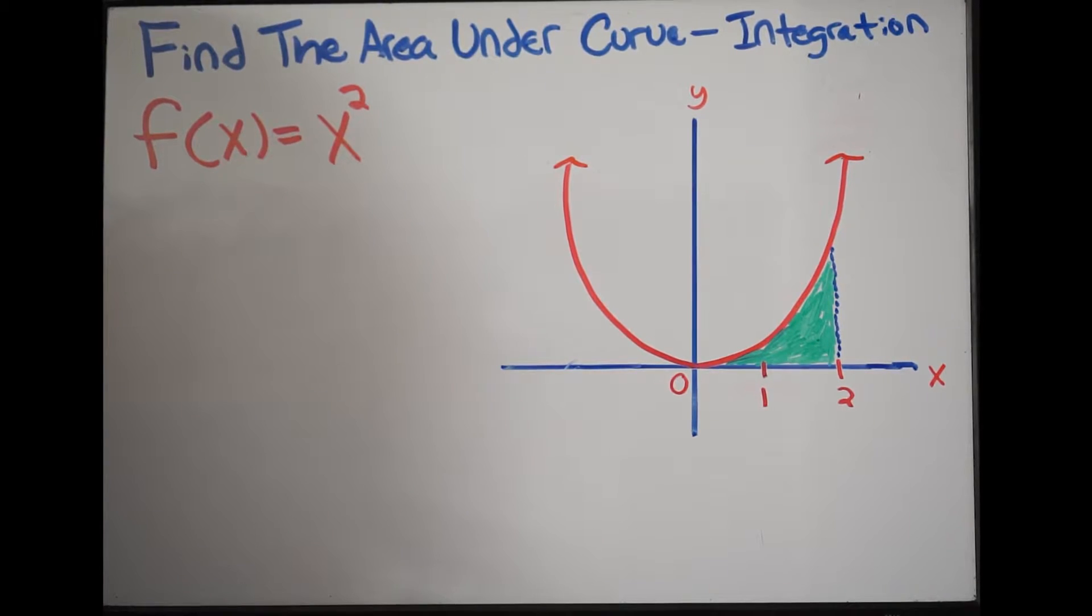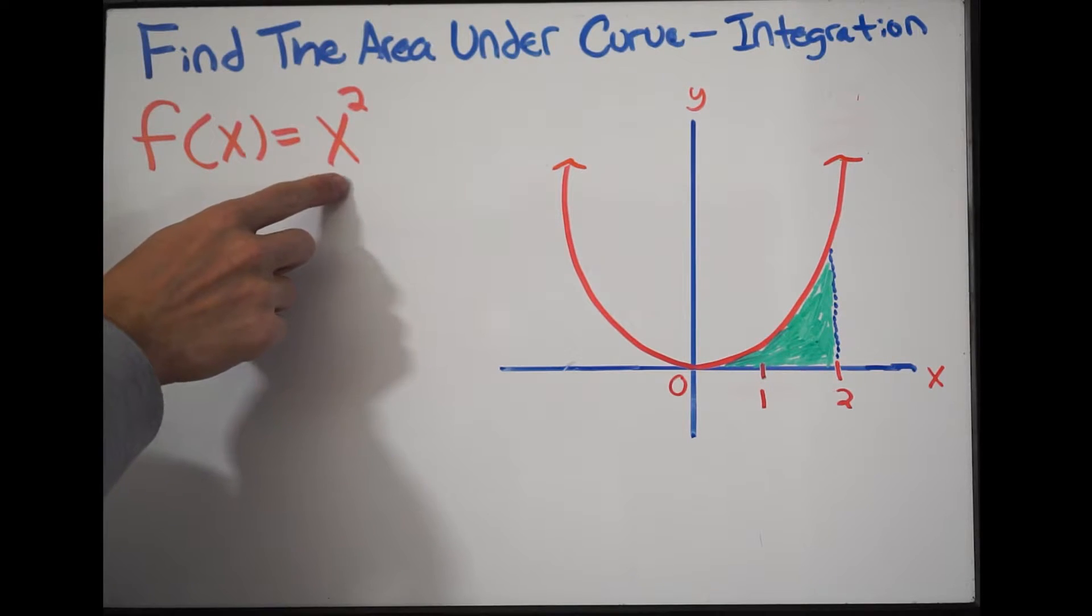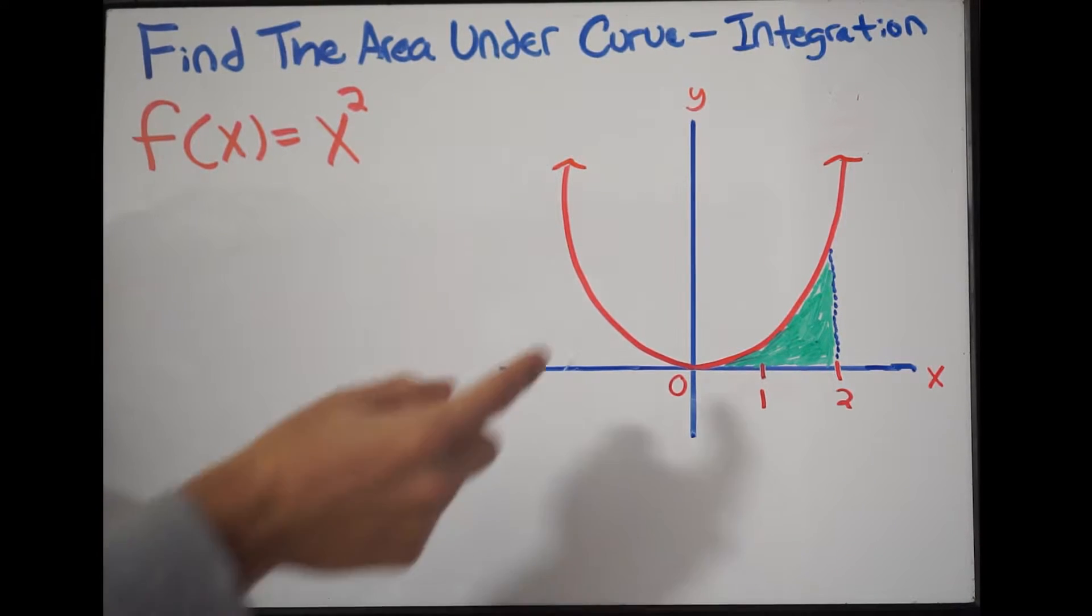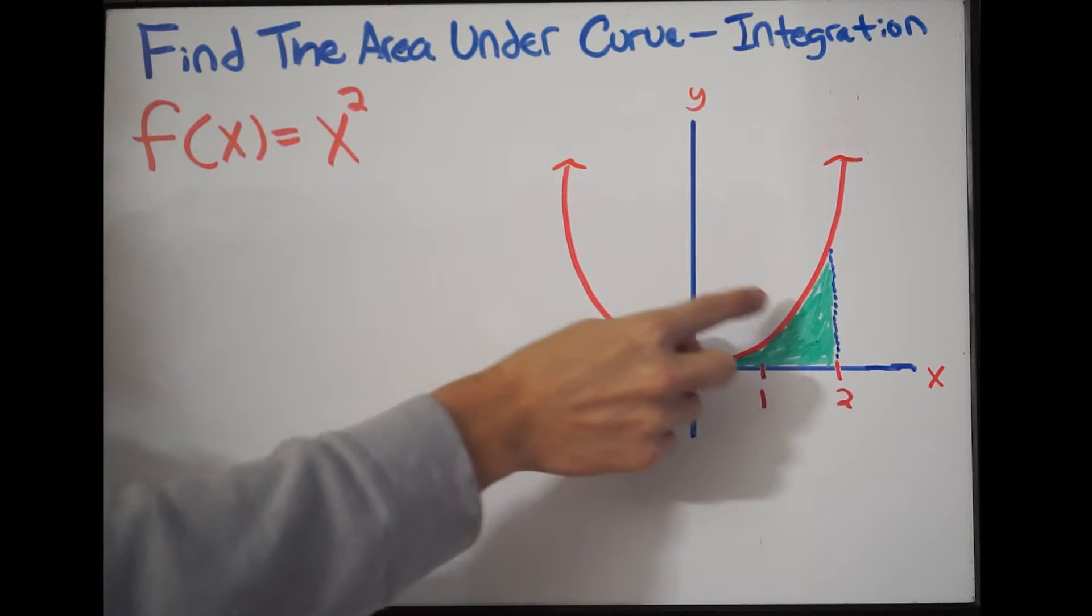In this example we're being asked to find the area under the curve and we must use integration. Notice here I have f(x) = x² and it's graphed over here to the right, and we want to find this area under the curve going from 0 to 2, this area here shaded in green.